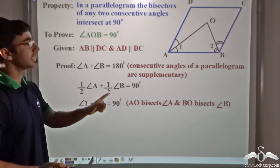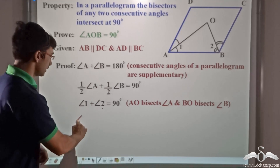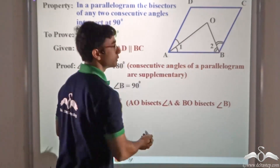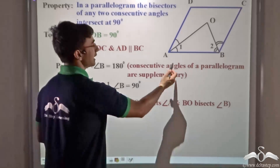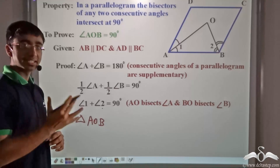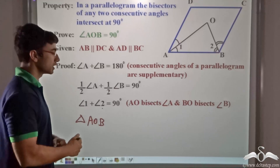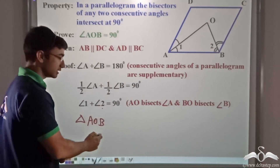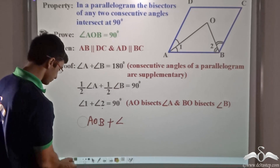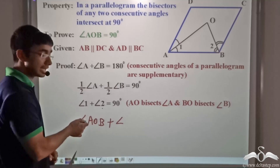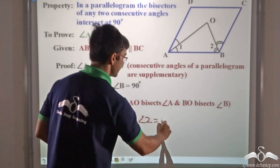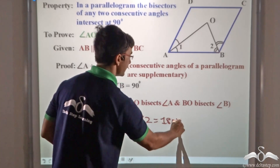Now consider triangle AOB. In triangle AOB, the sum of angle 1 and angle 2 is equal to 90 degrees. You know that in a triangle the sum of interior angles is 180 degrees, so I can write: angle AOB plus angle 1 plus angle 2 is equal to 180 degrees.